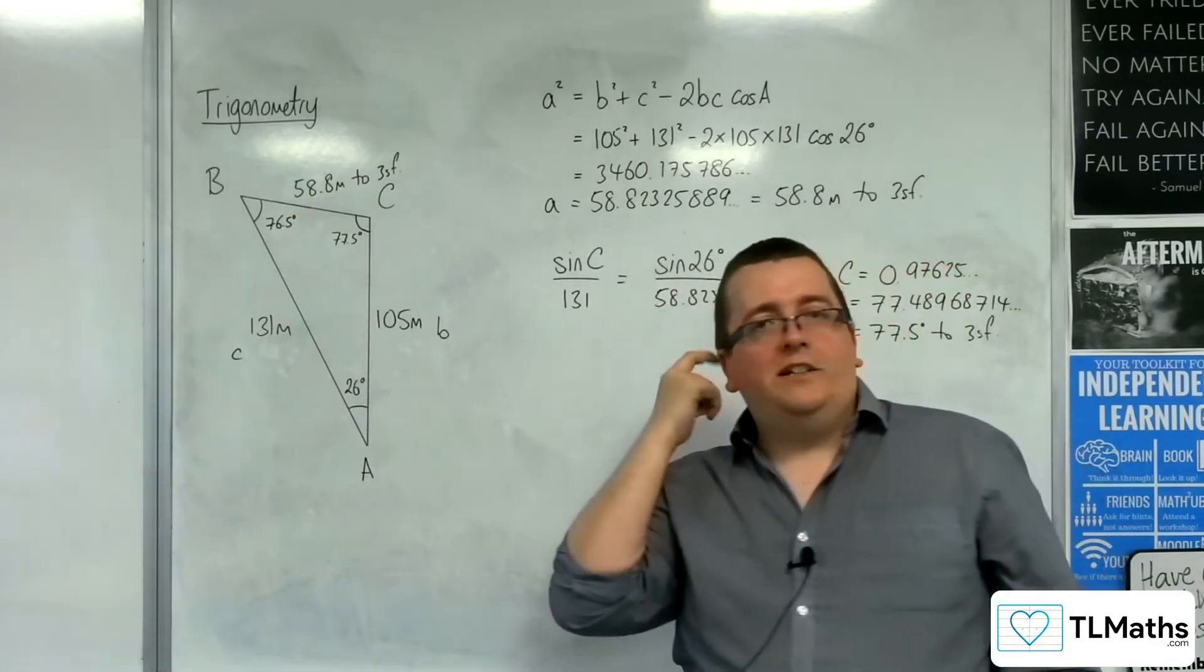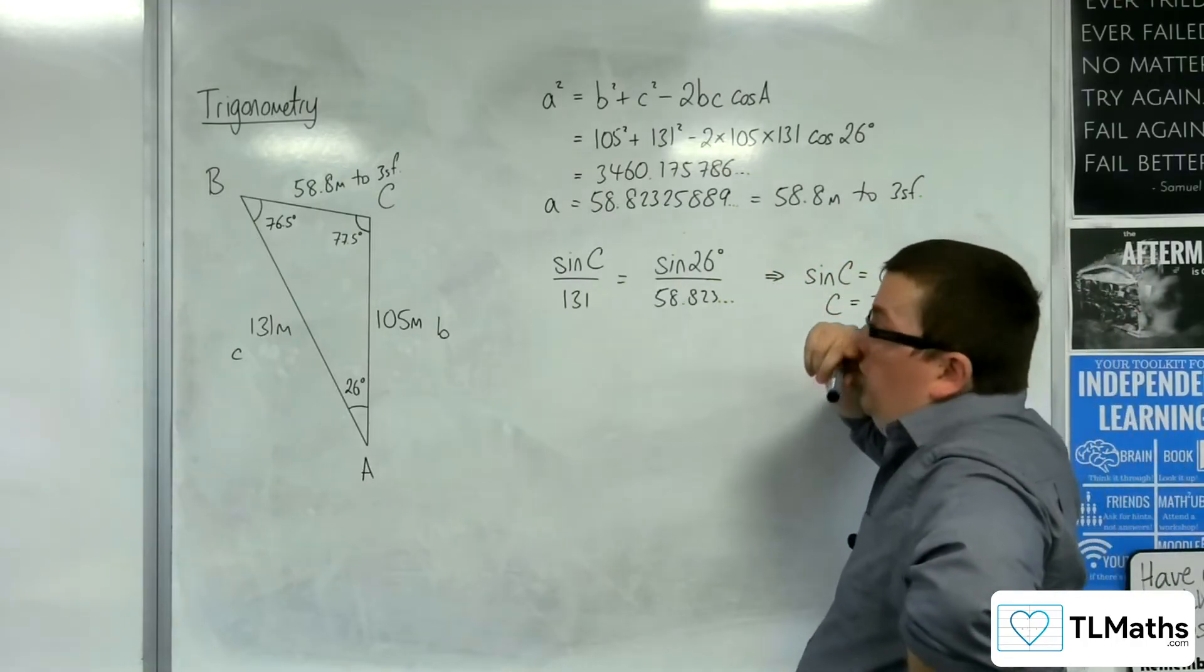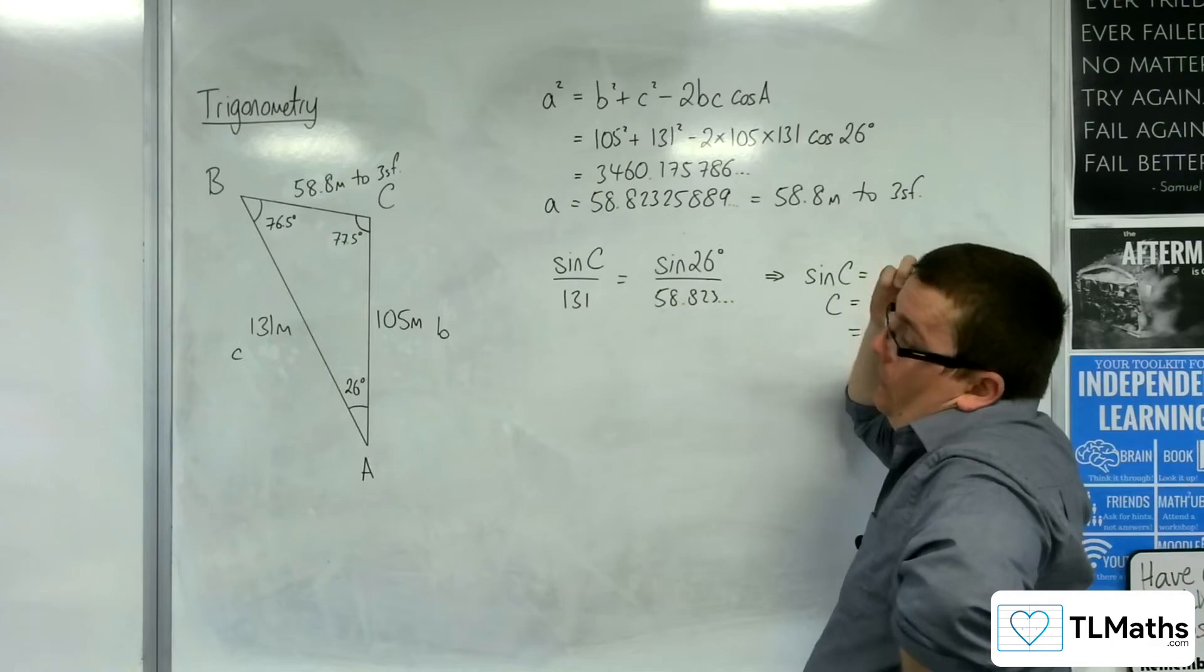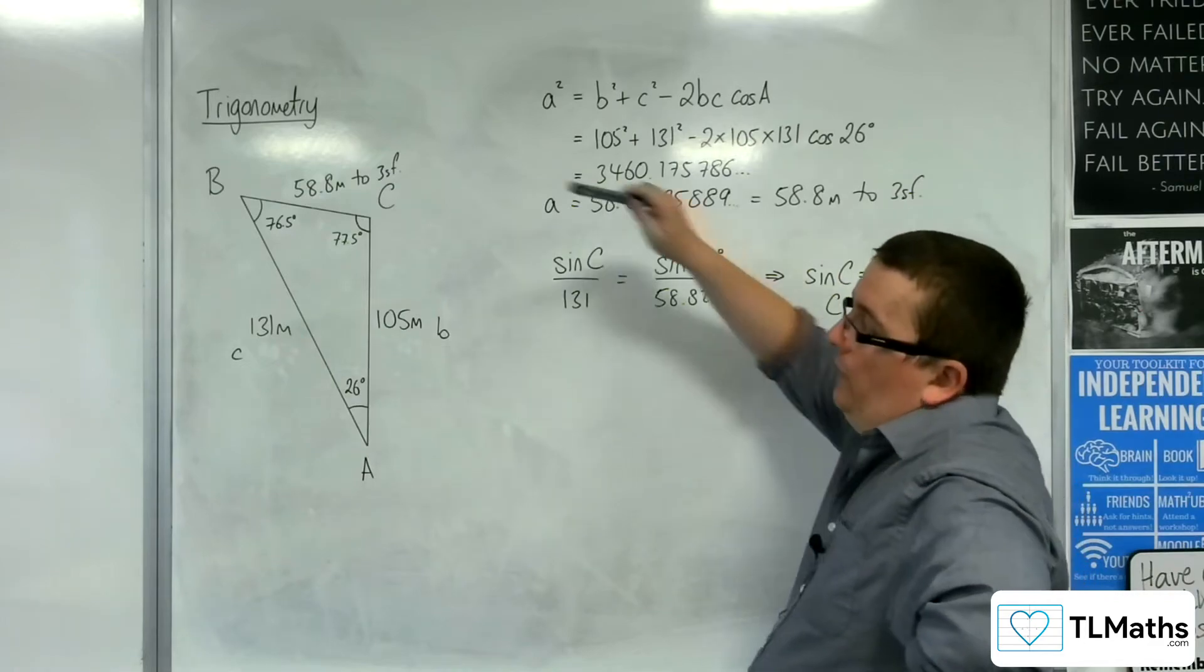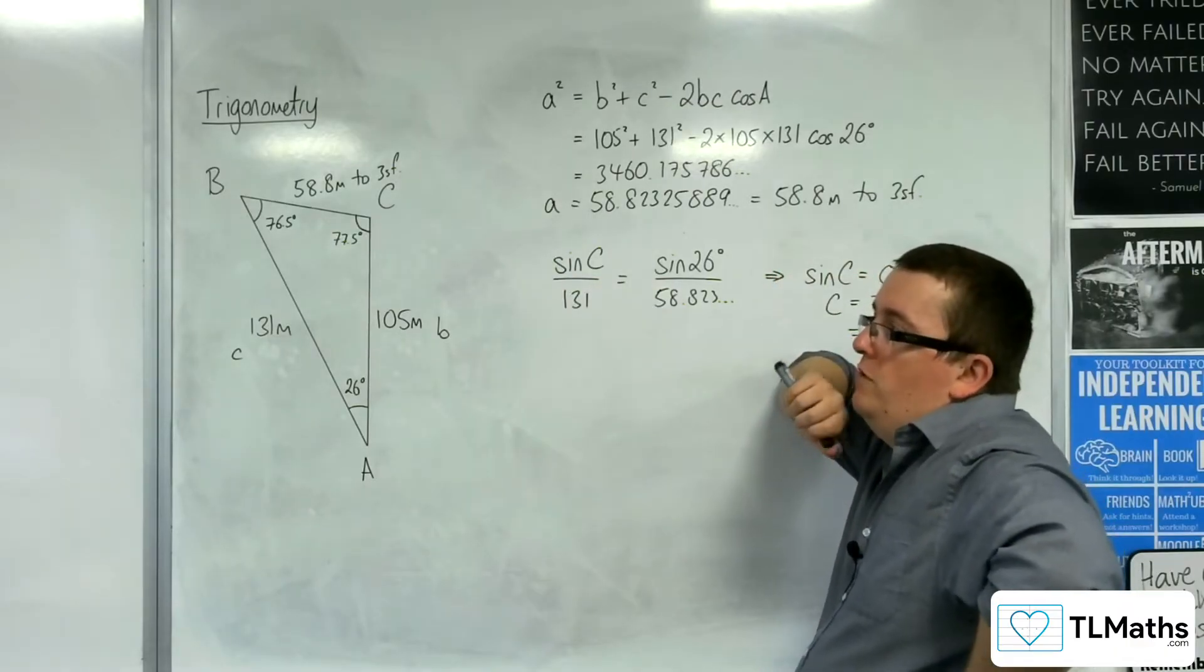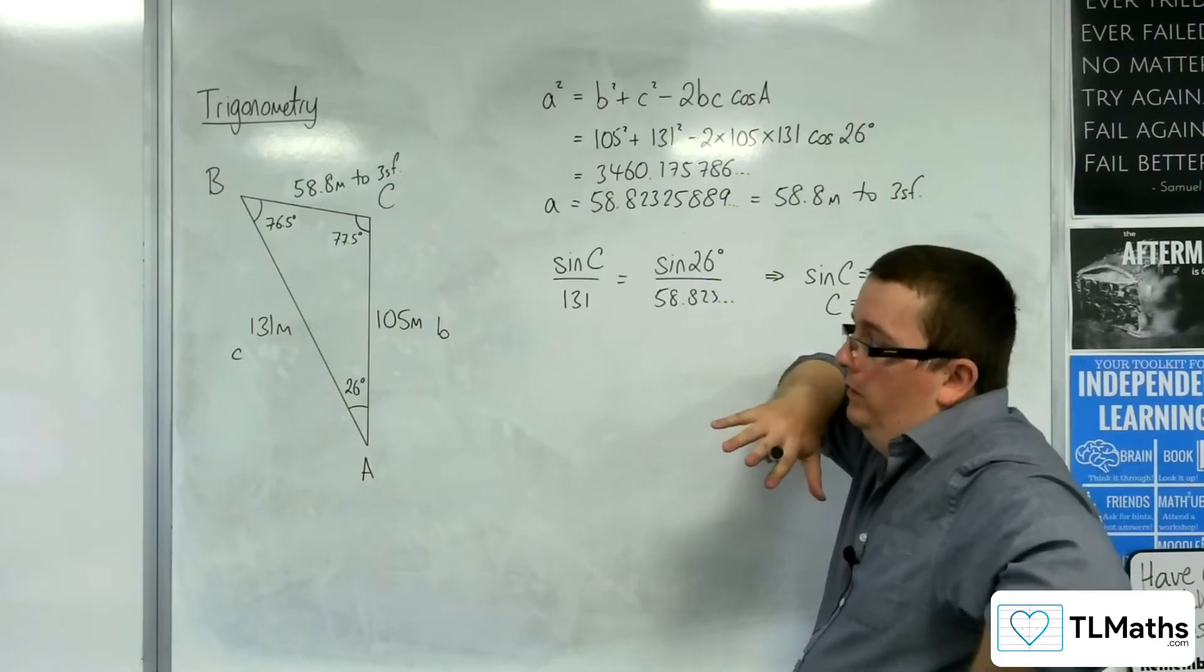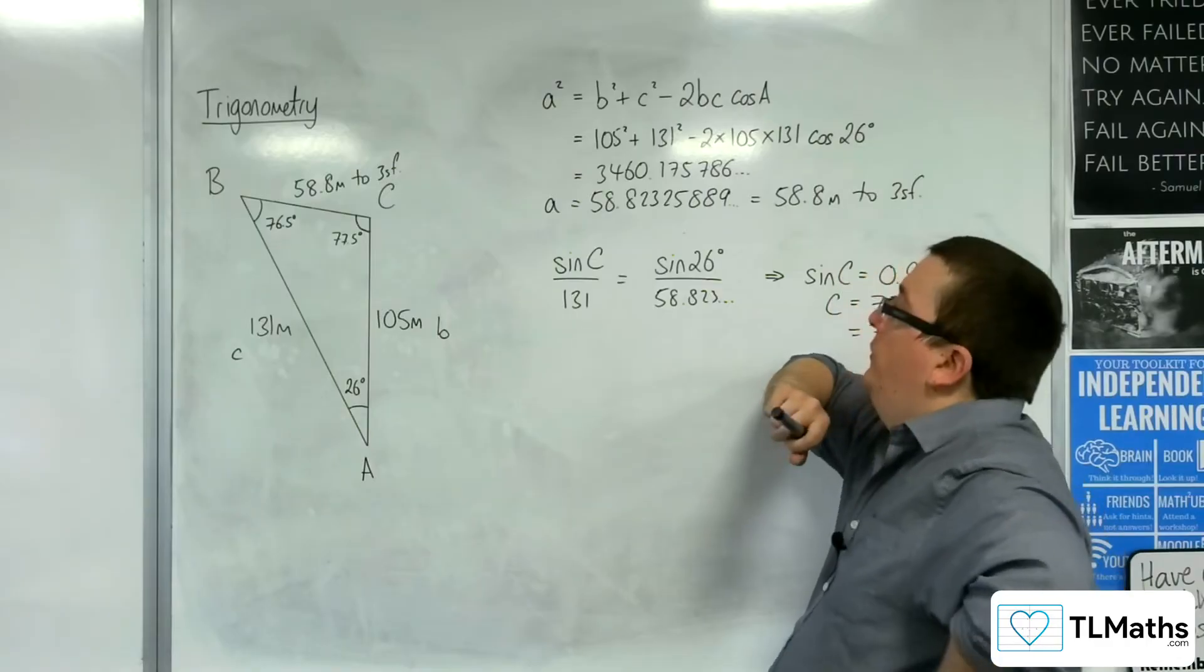Now, my diagram, as I said, wasn't drawn accurately, but things don't look quite right. The problem is that, in the way that I've drawn this diagram, this appears to be an obtuse angle. So, the 77.5 doesn't really seem to fit. That's not to say that it's wrong, but let's see, there may be a discrepancy here.